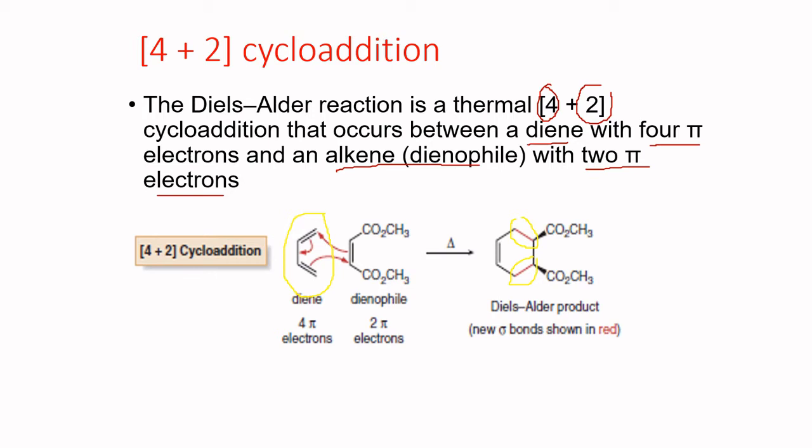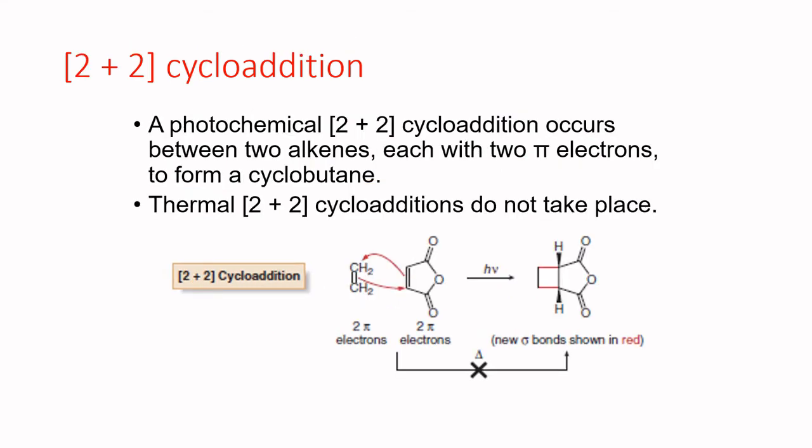The new pi bond in the Diels-Alder product is circled in yellow. Another type of cycloaddition is 2+2 cycloaddition. A 2+2 cycloaddition will only happen under photochemical conditions — it occurs when two alkenes, each with 2 pi electrons, react to form cyclobutane.